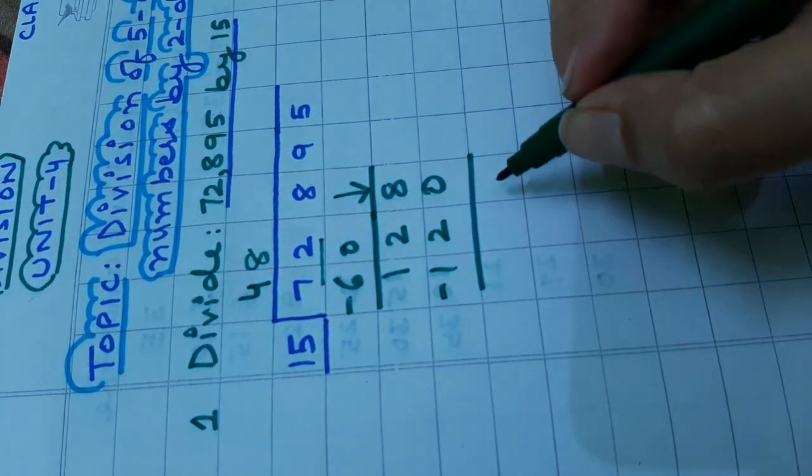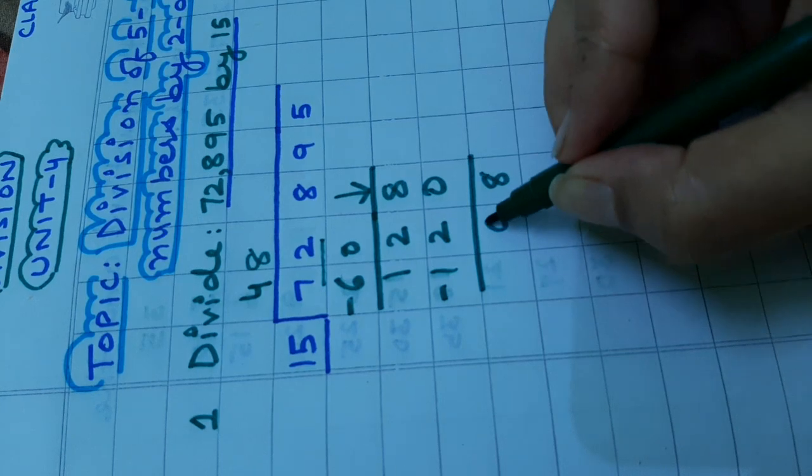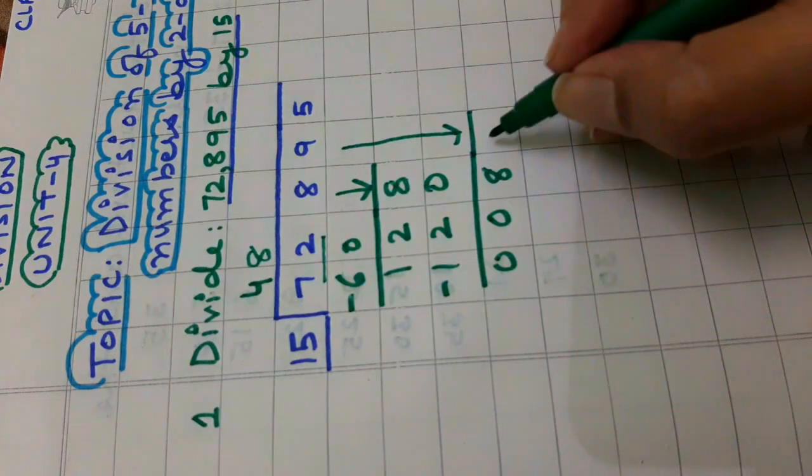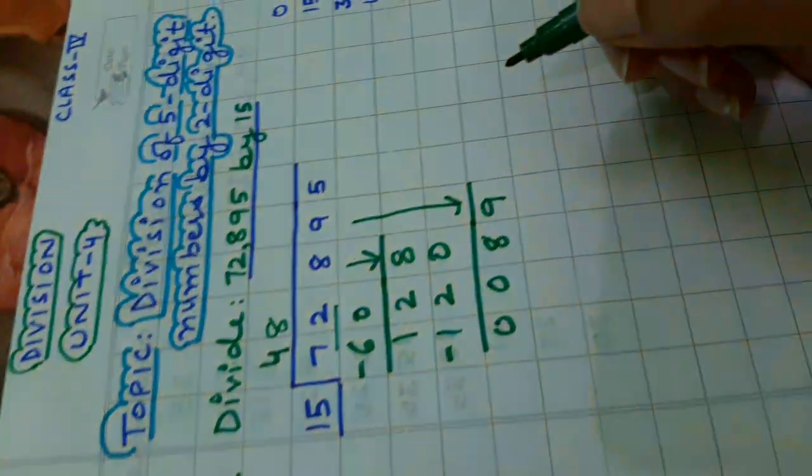Subtract it. The answer is 8, 0, 0. Bring down 9. It will become 89.